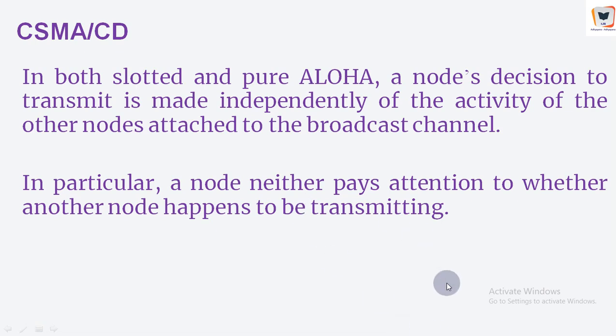In the network world this is called carrier sensing: a node listens to the channel before transmitting. If a frame from another node is currently being transmitted, a node waits, backing off a random amount of time, and then senses the channel again. If the channel is sensed to be idle, the node begins frame transmission; otherwise, the node waits for another random amount of time.